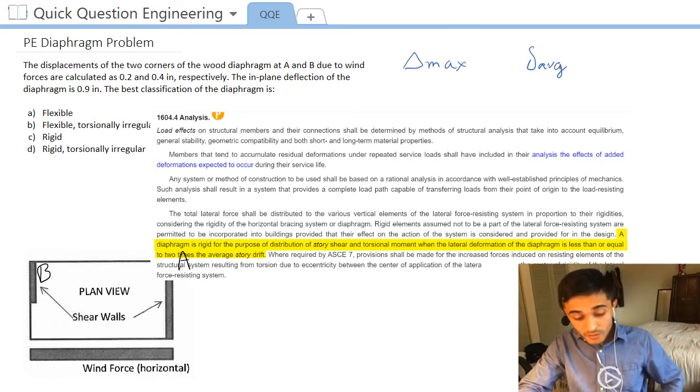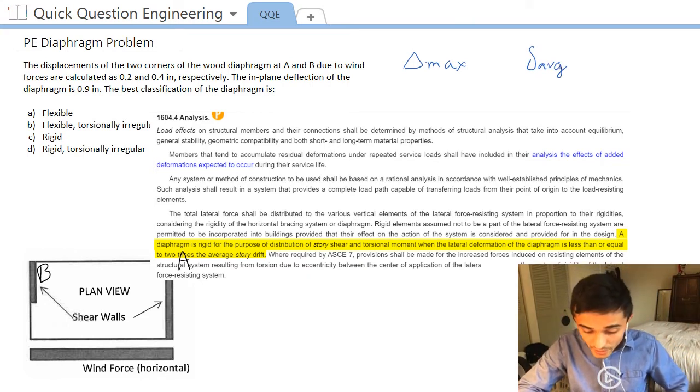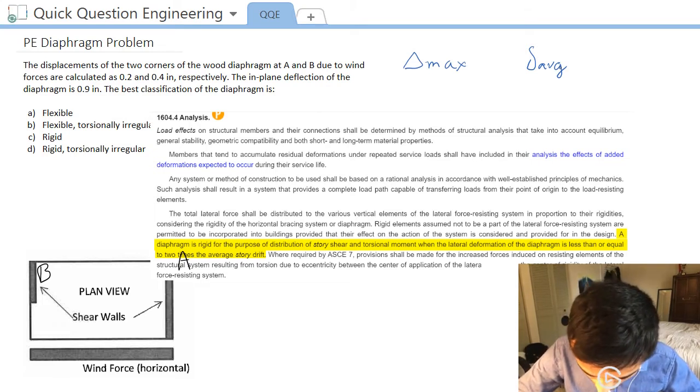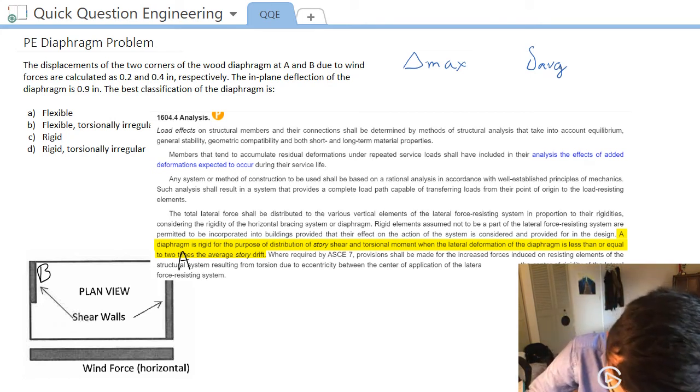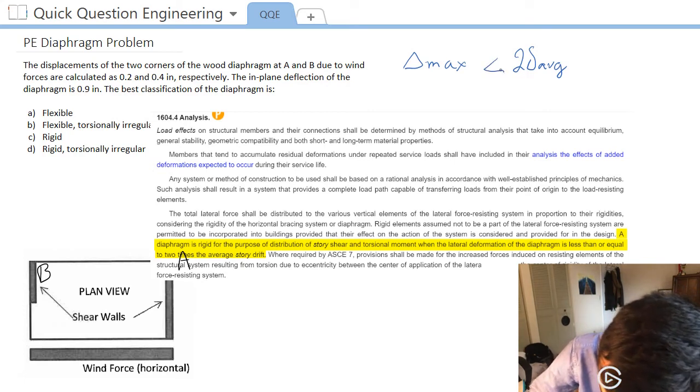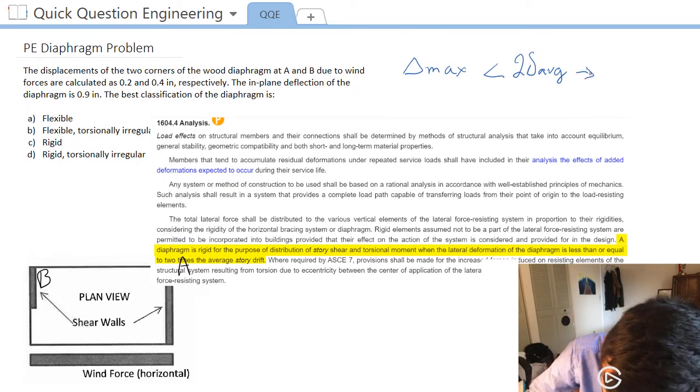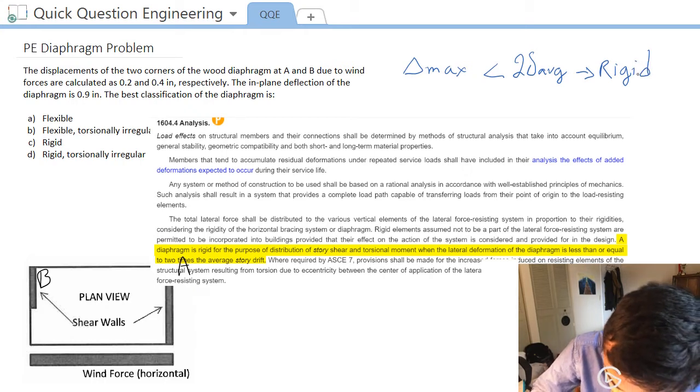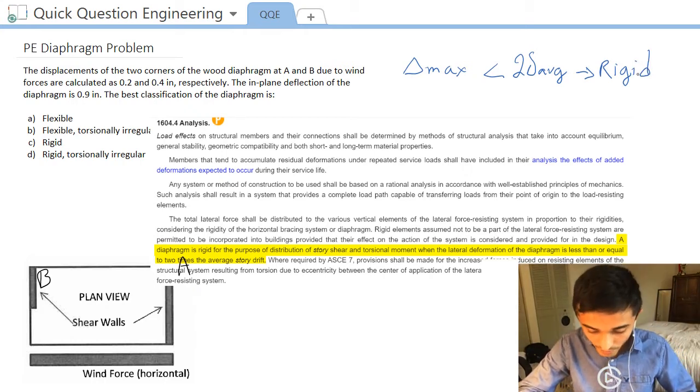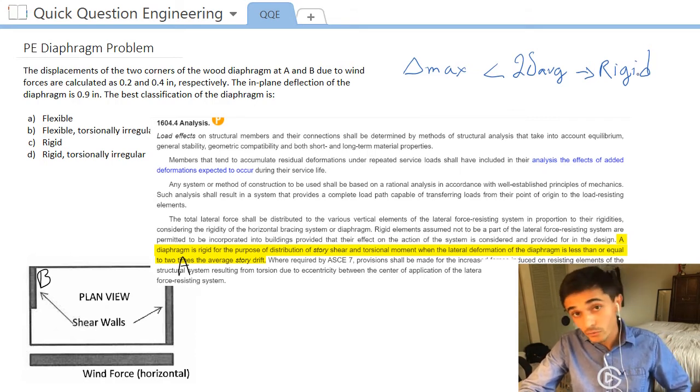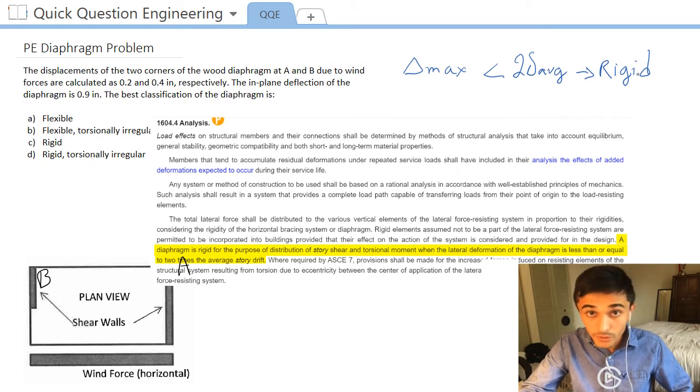So the statement says that if the maximum diaphragm deflection is less than two times the average, if it's less than two times, then our diaphragm is considered rigid. And if it's greater than that, if the maximum deflection is greater than two times the average story drift, then it would be the opposite. The diaphragm wouldn't be rigid, so it is flexible.